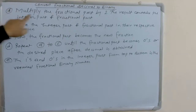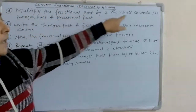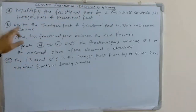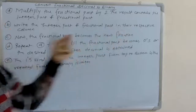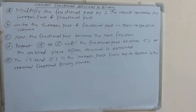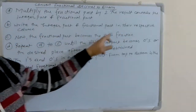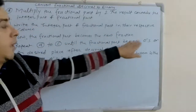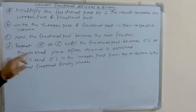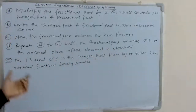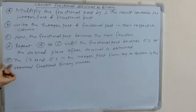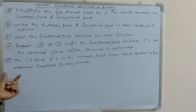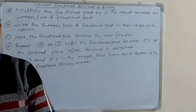These are the rules. The first rule is: multiply the given fractional part by 2. The result contains the integer part and fractional part. Second: write the integer part and fractional part in their respective columns. Third: the fractional part becomes the new fraction. Fourth: repeat A to C until the fractional part becomes 0 or the desired place after decimal is obtained. And the last rule is: the ones and zeros in the integer part from top to bottom is the required fractional binary number.